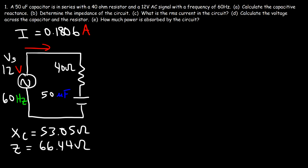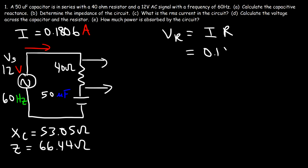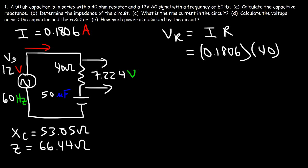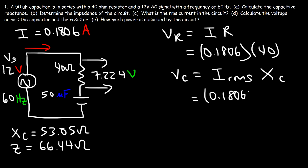Now let's calculate the voltage across the capacitor and the resistor. The voltage across the resistor, by Ohm's law, is the RMS current times the resistance: 0.1806 amps times 40 ohms equals 7.224 volts. The voltage across the capacitor equals the RMS current multiplied by the capacitive reactance: 0.1806 amps times 53.05 ohms equals 9.5808 volts.